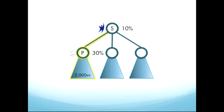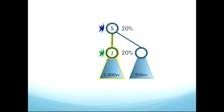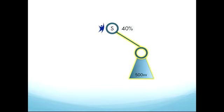In the Pearl leg, the Pearl partner would receive 30% on their volume, and the Sapphire would be paid 10%. So, $600 would be paid to the Pearl, and $200 would go to the Sapphire. In the Jade leg, the Jade partner would earn 20%, and the Sapphire would earn 20%, just like in our previous example, so $200 each. In the third leg, where nobody has qualified to receive differentials, the Sapphire would earn all 40% on that 500 VV. So, in this case, once again, $200.